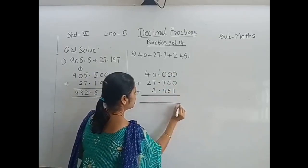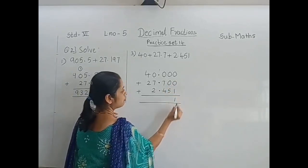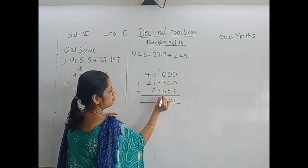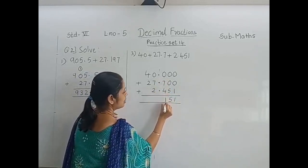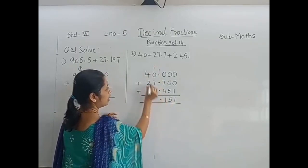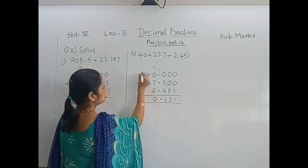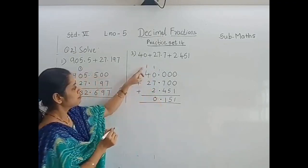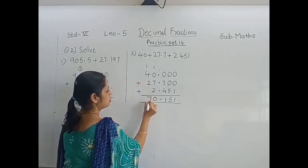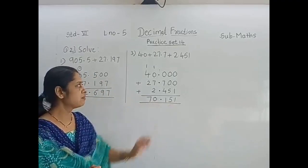Now do the addition from the right side. 0 plus 0 plus 1 is 1. 0 plus 0 plus 5 is 5. 0 plus 7 plus 4 is 11 — carry 1. Put the decimal point. Then 1 plus 7 is 8, plus 2 is 10 — carry 1. 1 plus 4 is 5, plus 2 is 7. So your answer is 70.151.